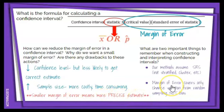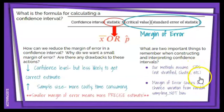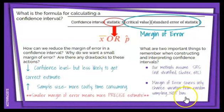Two important things to remember when constructing and interpreting confidence intervals. First, we assume our sample is a simple random sample — not stratified, not a cluster sample, just a simple random sample. Second, our margin of error covers chance variation from random sampling. It does not fix any kind of bias in our sample. Be careful not to say the margin of error will adjust for bias — it won't. It will only adjust for sample variation.